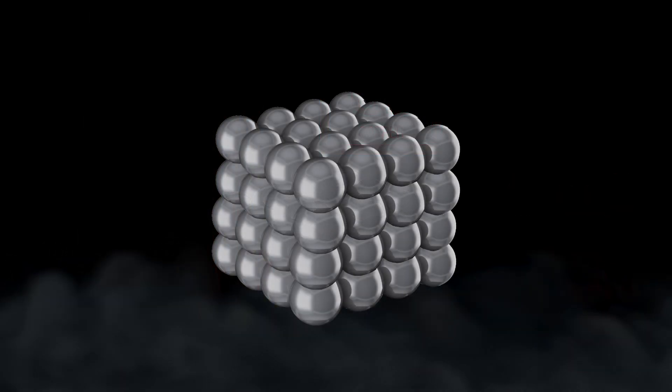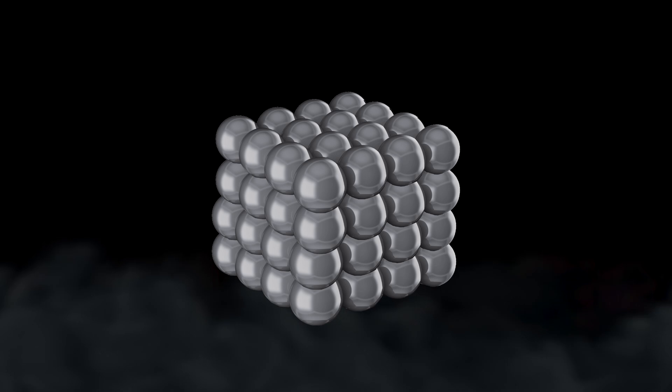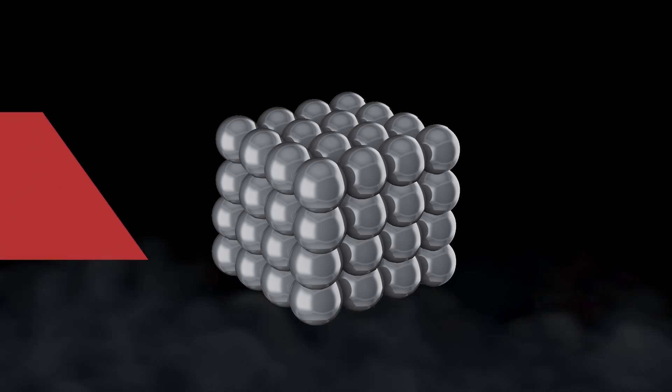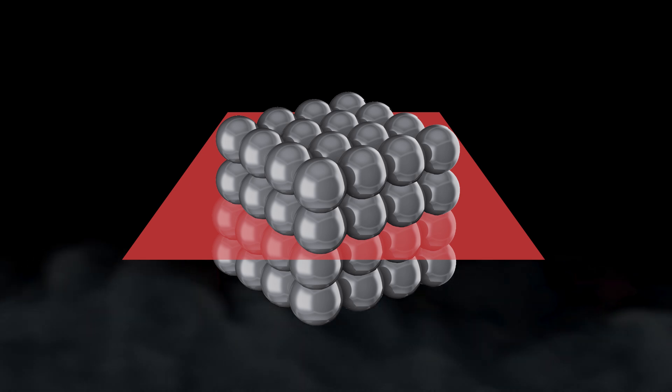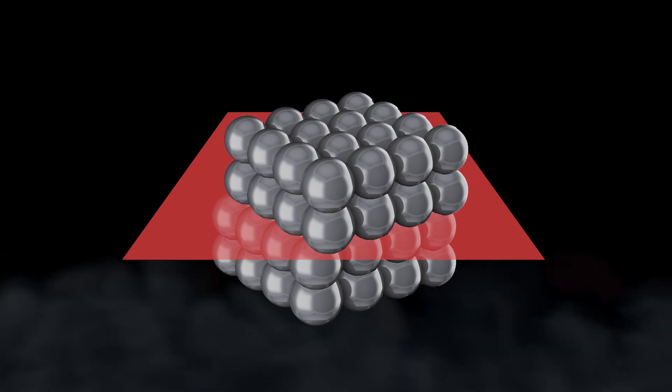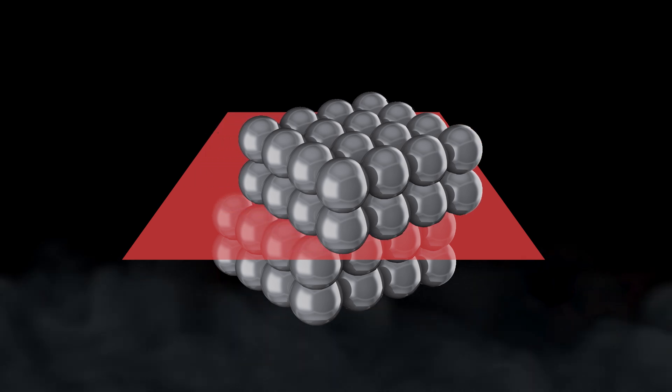You see, the atoms in all pure metals take the form of repeating lattice structures. This causes pure metals to have areas of weakness called slip planes, and when a strong enough force is applied to the metal, the atoms along the slip planes move, which is why metals are moldable.